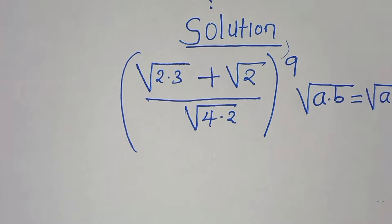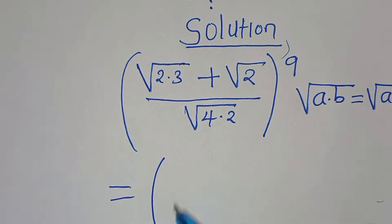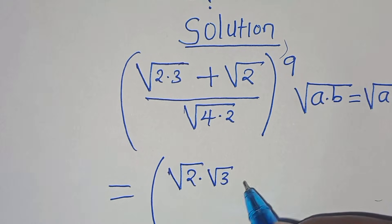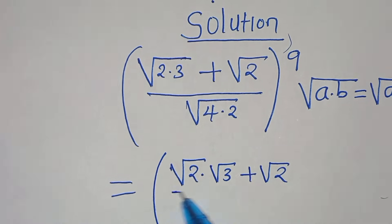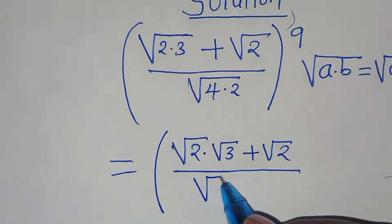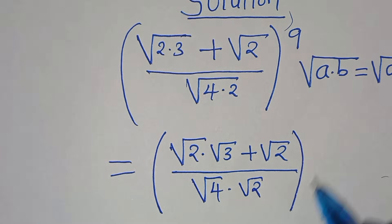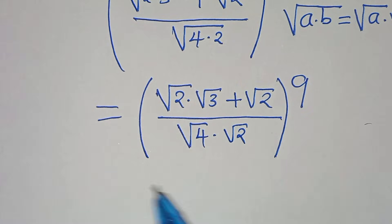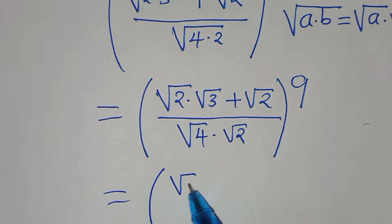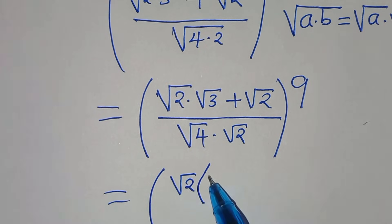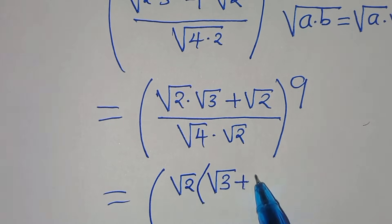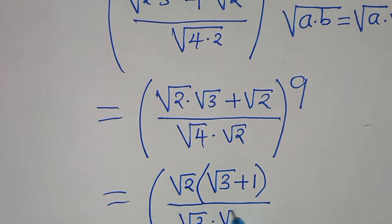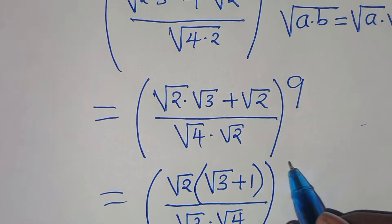Applying this identity, we have square root of 2 multiplied by square root of 3, plus square root of 2, divided by square root of 4 multiplied by square root of 2, everything raised to the power of 9. Since square root of 2 is common in the numerator, we can factor out square root of 2 so that we have square root of 2 times the quantity square root of 3 plus 1, divided by square root of 2 times square root of 4, raised to the power of 9.